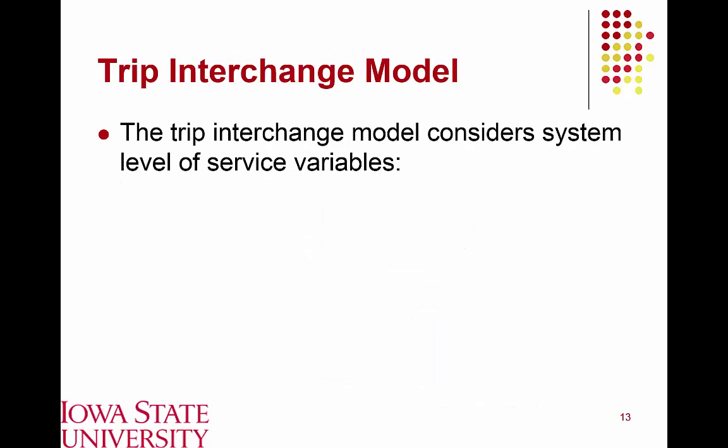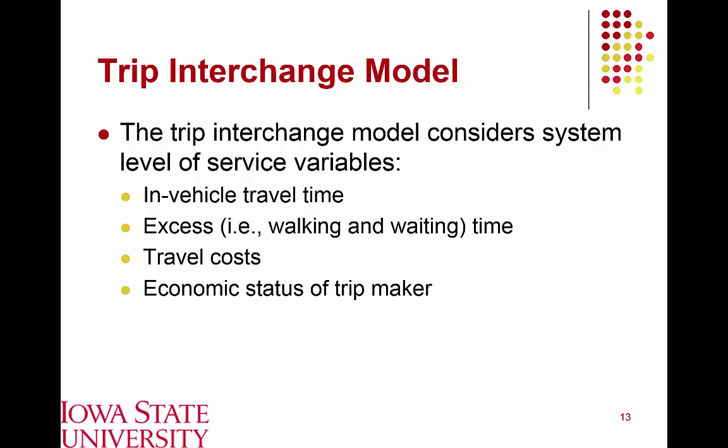The trip interchange model builds upon a more complex approach because it can incorporate system-level service variables — different factors we can use to quantify how good the level of service is provided by a transit option. The types of variables considered include in-vehicle travel time (how long it takes to get from origin to destination), excess time (walking to a bus stop, waiting for the bus to arrive), and travel costs — fare ridership or monthly passes for transit, and fuel, parking, and maintenance costs for automobiles.